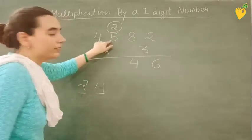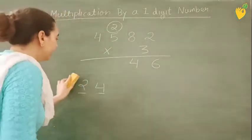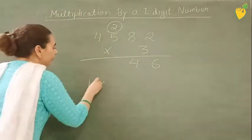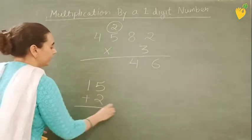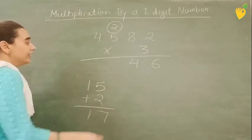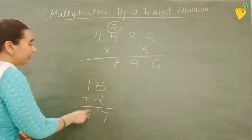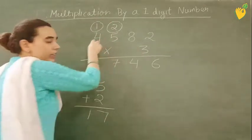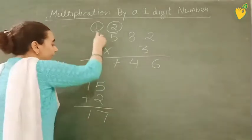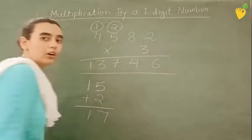Now 3 5's are 15. But here 2 is carry. So 15 plus 2 is 17. Now again this 7 will write here. And this 1 again will be carry. Now 3 4's are 12. 12 plus 1 is 13.